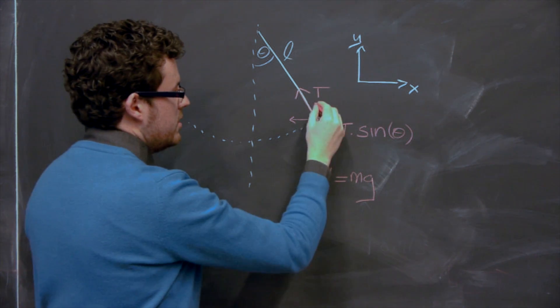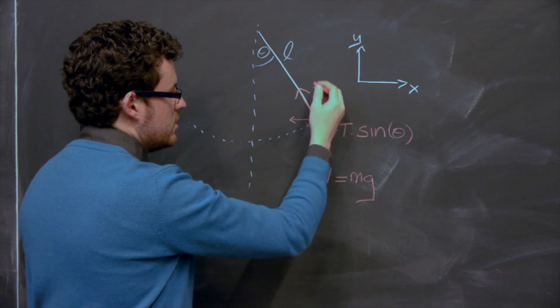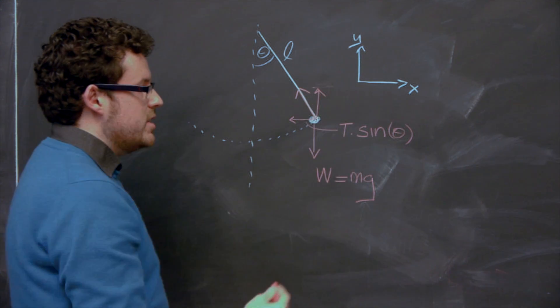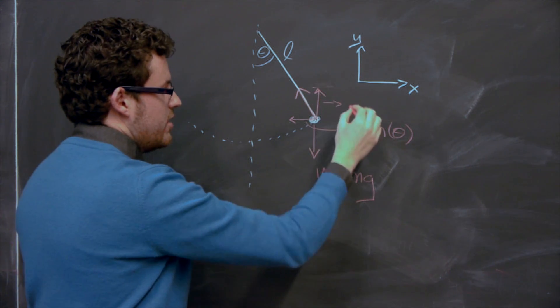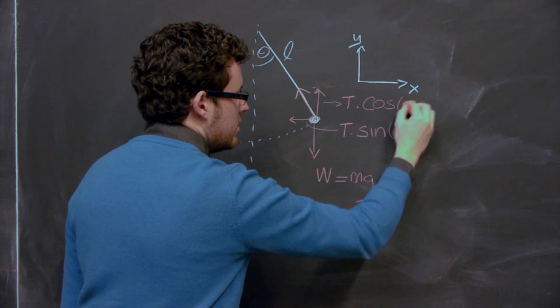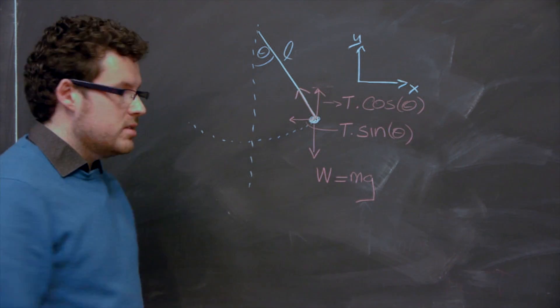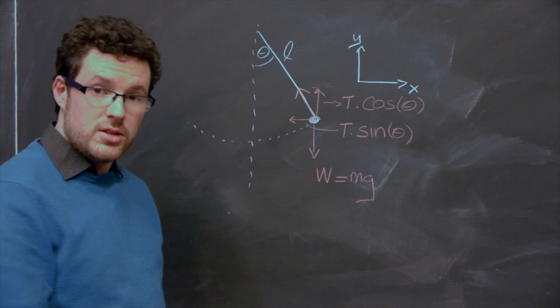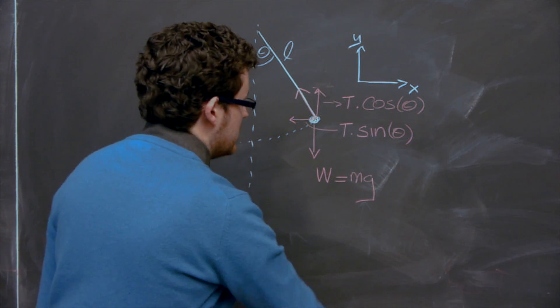The next one we want to consider is the force in this direction, in the y direction, and its value is given by T times cosine of theta. So now we will be able to look and compare the values of forces in both the x and y directions.